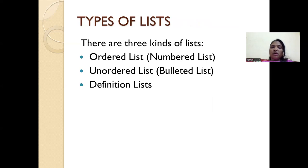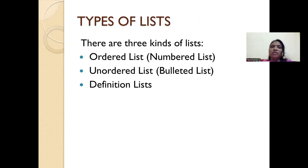When it comes to lists, there are three kinds of list which you can create using HTML. One is ordered list, the other one is unordered list, and the third one is definition list.